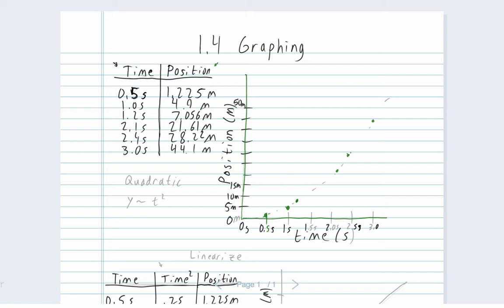And hopefully you can see pretty clearly that this is behaving quadratically. So this would be a quadratic relationship. Or in other words, we can just say this is quadratic, or we could say that y or position is related to t squared, or proportional to t squared.